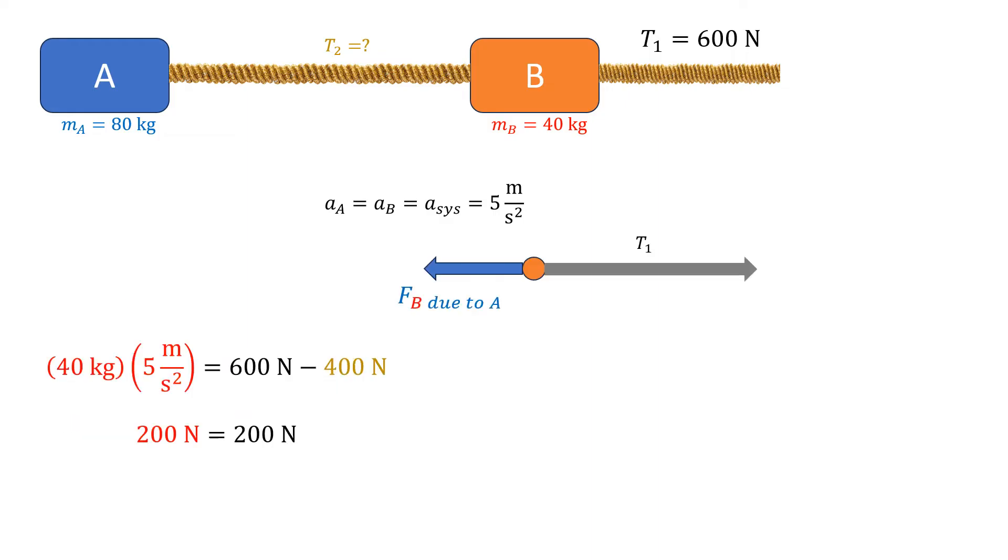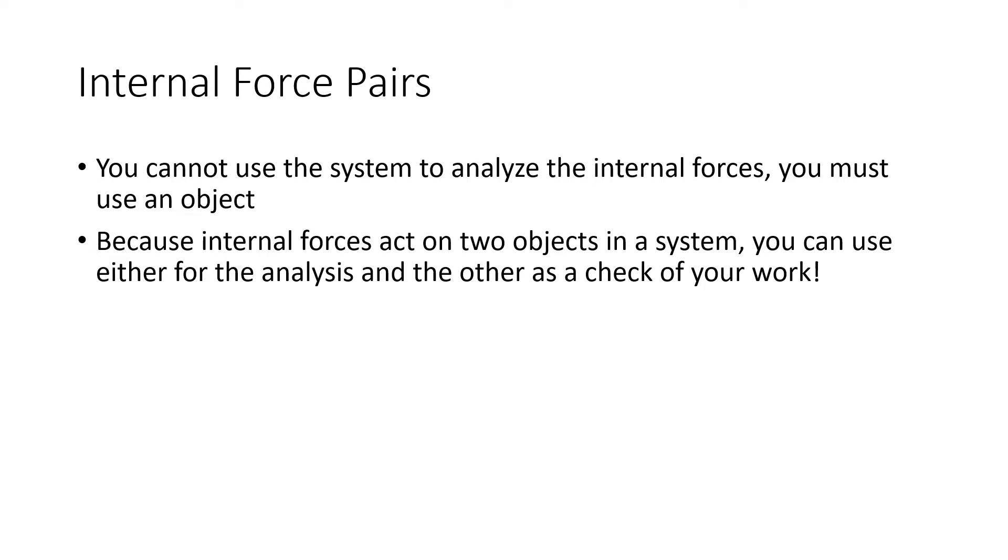So this is actually something that I can check. I can go back to the second object, B in this case, and I can run Newton's second law again, like figure out that the sum of the forces on thing B is just T1 minus T2. Substitute in the numbers that we just got a second ago, 40 kilograms in this case. And you see that the left side of the equation is 200 newtons. And on the right side, 600 minus the 400 newtons we just calculated using thing A gives me another 200 newtons. So because both sides of those equations come out to be the same, I know that I've done it correctly. So just like systems in algebra, you can use one thing to solve whatever you're looking for and the other thing to check your work. So internal force pairs cannot be analyzed by thinking about a system. You have to drill back to the original object or objects that you have. Because internal forces act on two things within a system, you can use either one of them to do the analysis and then use the other one as a check.